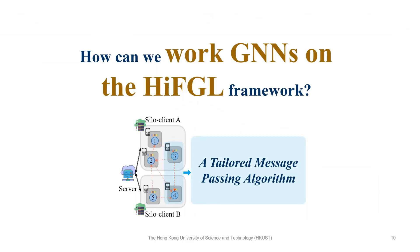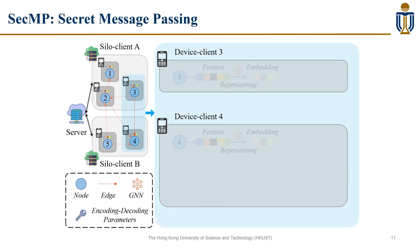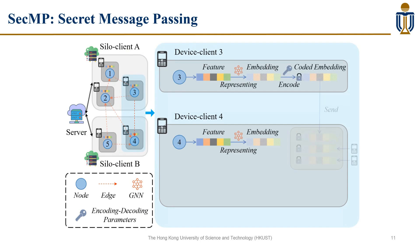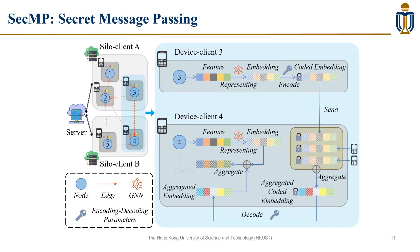We have a framework to meet requirements, but how can we work GNNs on it? We propose a secret message-passing algorithm for enabling graph learning on our framework in a privacy-preserving way.